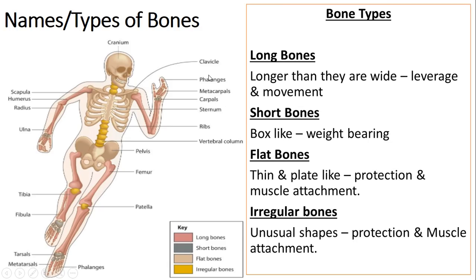You also need to know what type each bone is - you can use the colour-coded key to help you. The first type are long bones - they're longer than they are wide, just like the femur, and they generally help us to move about or provide levers for movement, for example when kicking a ball. You also have short bones, which are box-like shapes. Your carpals act as short bones, as do your tarsals, and they help to bear weight. For example, if you were doing a handstand, the carpals bear the weight of your body on your wrist, or standing upright, the tarsals bear the weight of the rest of the body.